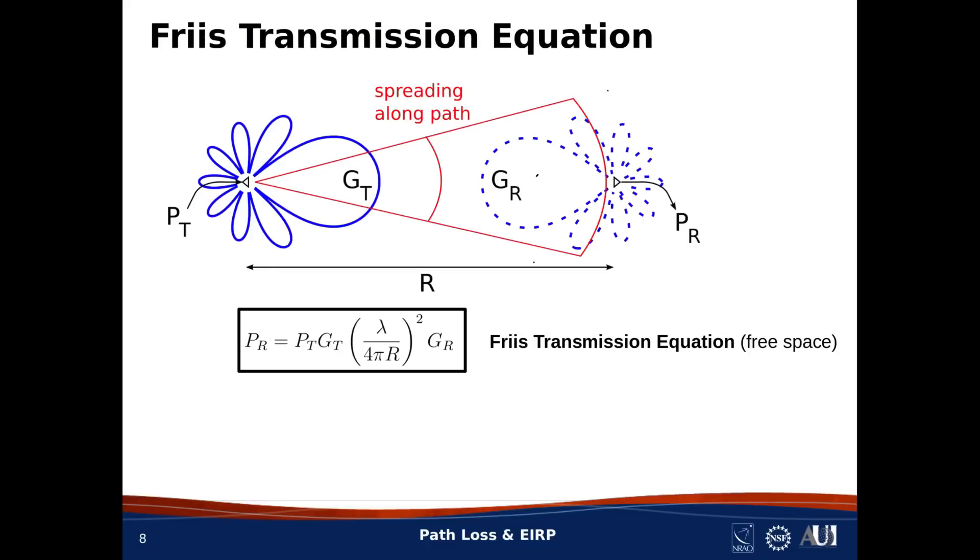This equation that we've developed is known as the Friis transmission equation for free space. As promised earlier, this equation tells you the received power given the transmit power, the frequency, that is, via wavelength, distance, and the gains of the antennas. This equation is exactly what you want for analysis and design of radio links.